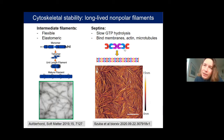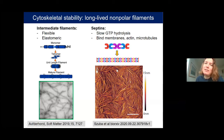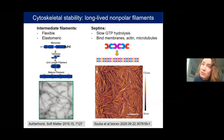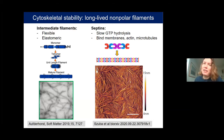Septins are different — they are also non-polar filaments made of oligomers, either hexamers or octamers, that form filaments by assembling head to tail and also bundling, as shown in atomic force microscopy images. Septins do hydrolyze GTP, but they do this very slowly, and it is not clear yet whether this creates substantial non-equilibrium behavior.